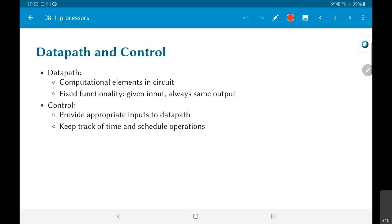And what the control part of the circuit needs to do is to provide appropriate inputs to the data path. In particular, it needs to keep track of the time, that is how many clock cycles have passed and to schedule operations. In other words, find out at which time instant are we currently, can we do this particular operation, can we move on to the next step and so on.